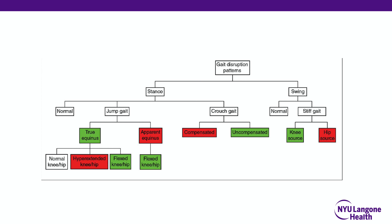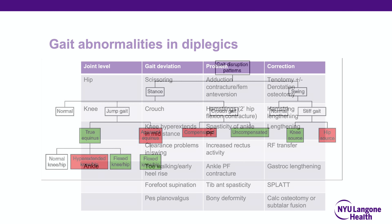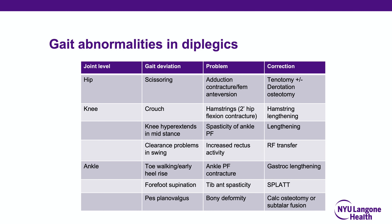Stiff knee gait is a common source of gait dysfunction, characterized by limited knee flexion in swing phase due to rectus femoris issues. A summary slide reviews the previously discussed gait patterns and can be reviewed at leisure.